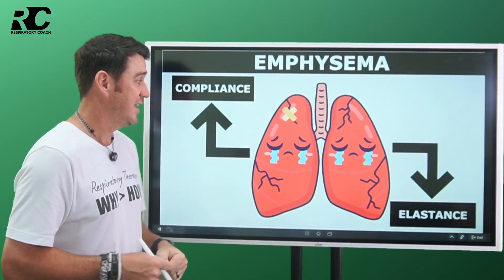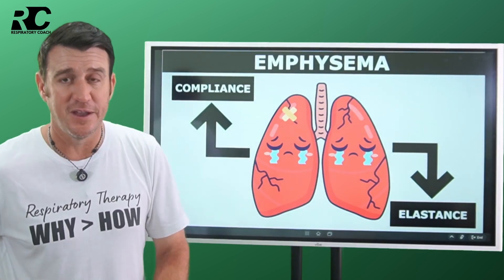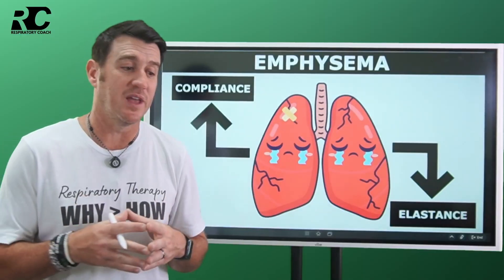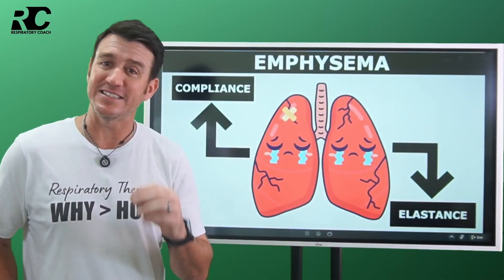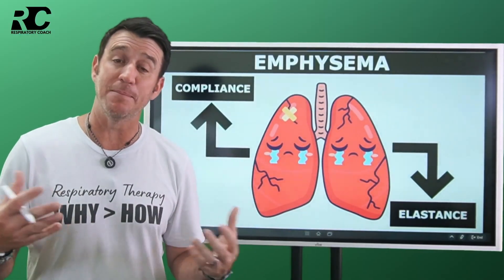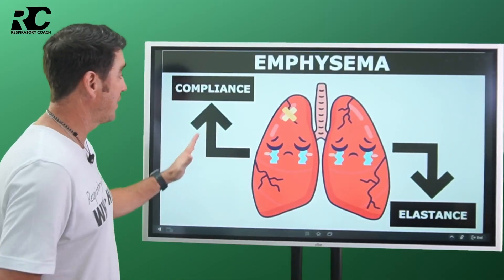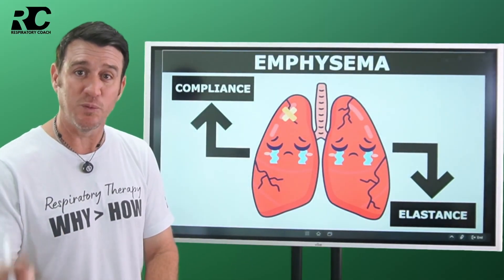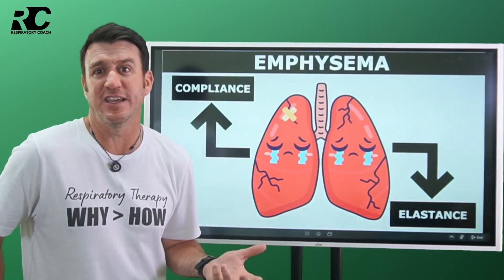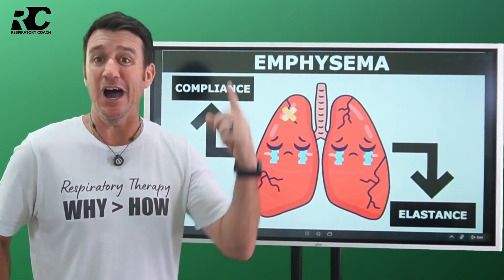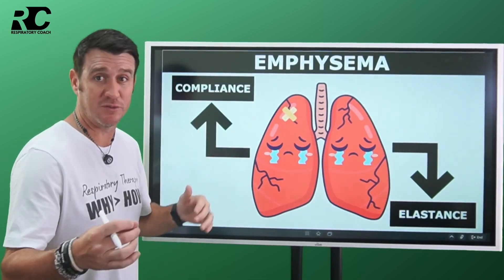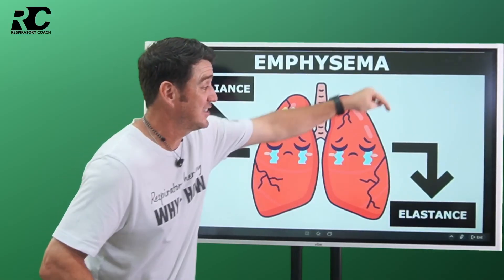Let's talk about emphysema. Contrary to popular belief, people think that if you smoke too much you'll get emphysema and your lungs will become black and stiff — and that's not true. They don't get stiff. They actually become overly compliant; they become big and floppy. So their compliance actually increases. But this is where increased compliance is a problem: if the compliance is overly compliant to a detrimental state, then elastance goes down.